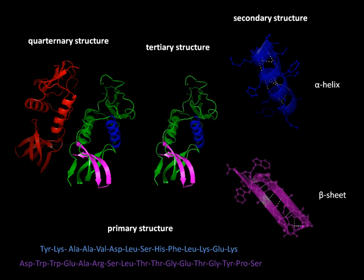The resulting three-dimensional structure is determined by the amino acid sequence or primary structure. The correct three-dimensional structure is essential to function, although some parts of functional proteins may remain unfolded, so that protein dynamics is important. Failure to fold into native structure generally produces inactive proteins, but in some instances misfolded proteins have modified or toxic functionality. Several neurodegenerative and other diseases are believed to result from the accumulation of amyloid fibrils formed by misfolded proteins.